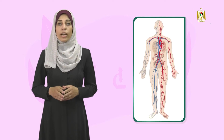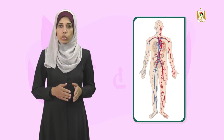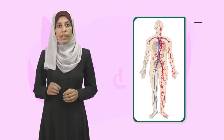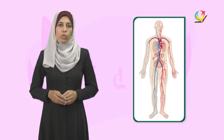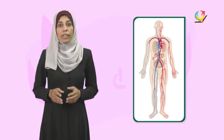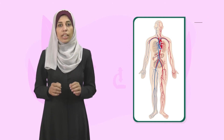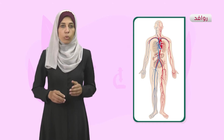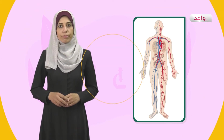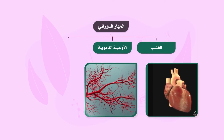تعلمنا سابقاً أن كل خلية من خلايا الجسم تحتاج إلى المغذيات والأكسجين لإنتاج الطاقة، وينتج عن ذلك فضلات وغاز ثاني أكسيد الكربون، ولا بد من التخلص من تلك المواد. فما هي وسيلة النقل داخل جسم الإنسان؟ إنه الجهاز الدوراني. يتكون الجهاز الدوراني من القلب والأوعية الدموية والدم.